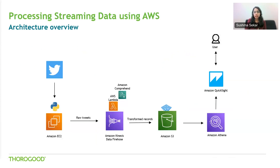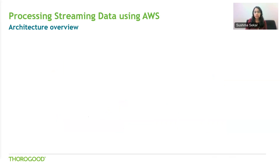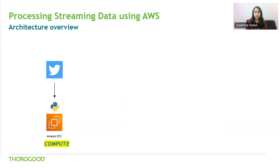Moving on to the architecture — on the screen you see a diagram with some AWS services. For this demo, we are ingesting data from Twitter. There's a Python script running in an Amazon EC2 instance that connects to the Twitter API to consume live streaming tweet data. EC2 is the compute service offered by Amazon, and the Python script uses the Tweepy library to connect to Twitter.